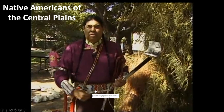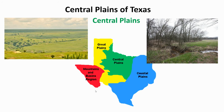The Waco Indians are part of the Wichita. That concludes our lesson on the central plains of Texas. We'll look at another physical region of Texas in our lesson tomorrow.